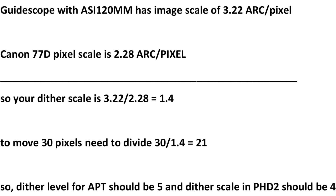So this is something I typed up in WordPad just to give you an example. The guide scope I'm using is an ASI 120 Mini Mono — a very common guide camera — and it has a pixel scale of 3.22 arc seconds per pixel. The Canon 77D pixel scale with the telescope I'm using is 2.28 arc seconds per pixel. You can calculate this in Stellarium by putting in the pixel size of the camera, which is 3.75 microns, paired with the focal length of the guide scope. You can also use the calculator on that site for calculating your pixel scale.